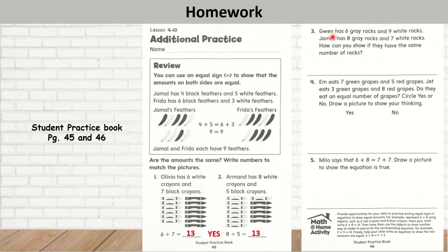Question number 3: Gwen has 6 gray rocks and 9 white rocks. Jane has 8 gray rocks and 7 white rocks. How can you show if they are the same number of rocks? 6 plus 9 is equal to 15, and 8 plus 7 is also equal to 15. Are they the same? Yes, they are the same.